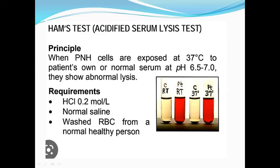To screen this condition, one test is the HAM's test — the acidified serum lysis test. The principle: when PNH cells are exposed to the patient's own or normal serum at pH 6.5 to 7 (acidic serum) at 37°C, they show abnormal lysis. Normal red cells should not lyse at this pH, but due to the disease, PNH red blood cells lyse due to the acidity. We acidify the serum, add the patient's red cells, and observe whether lysis is present or not.